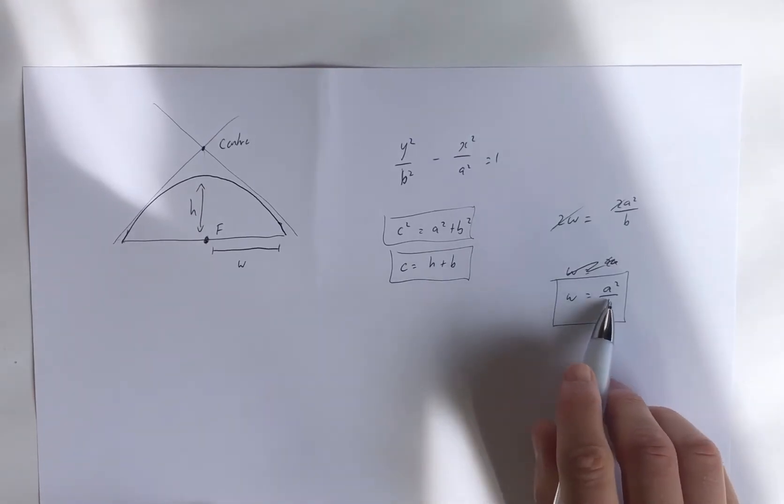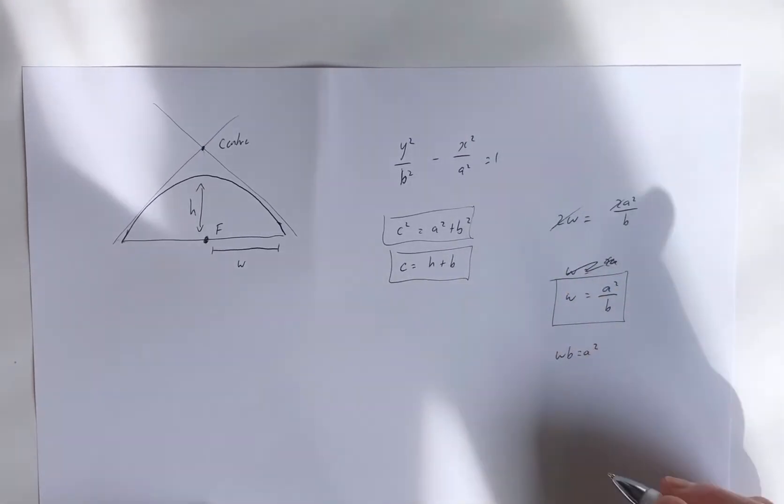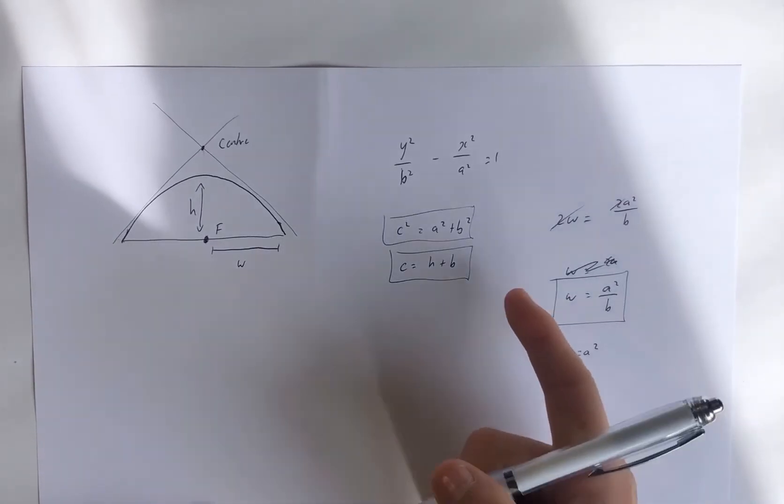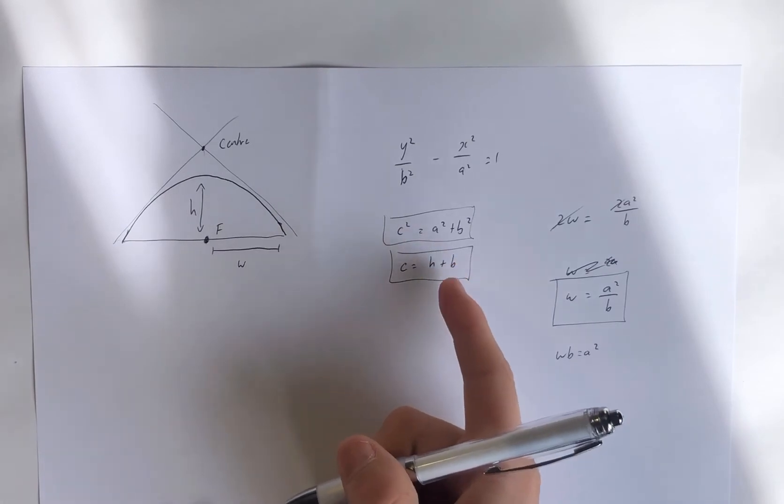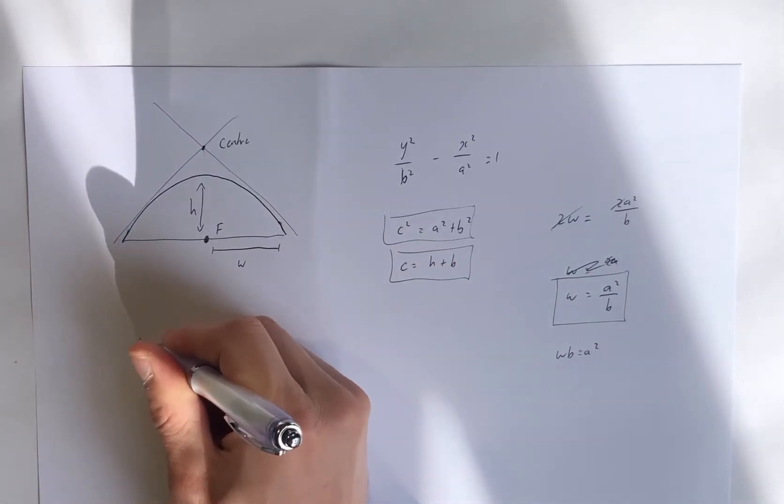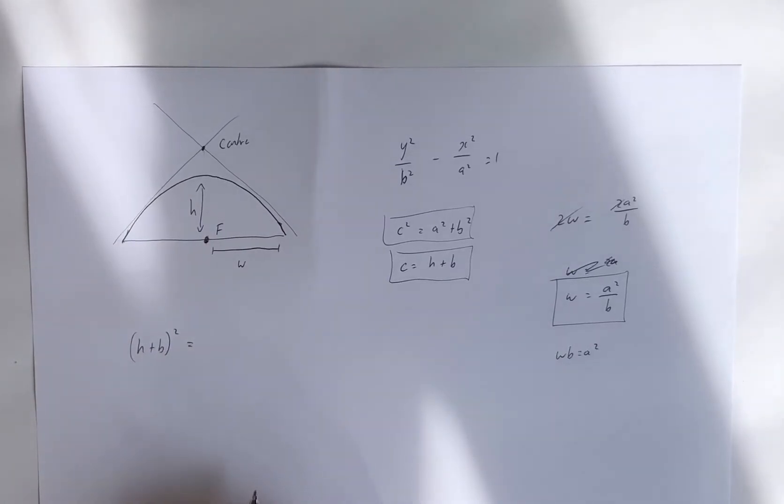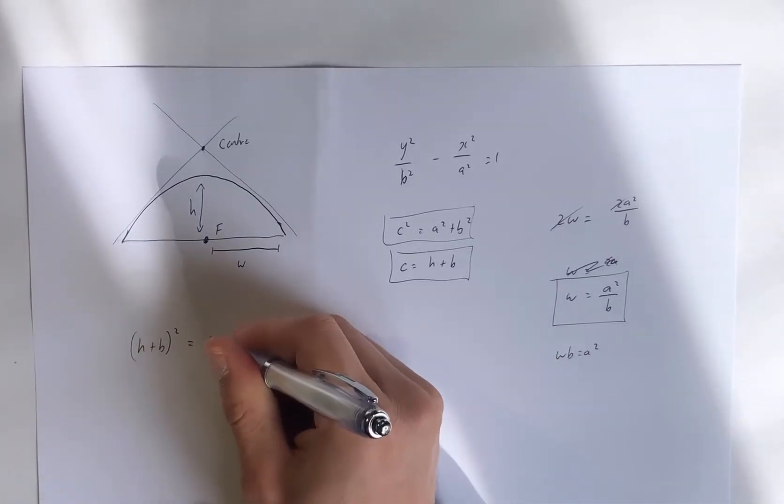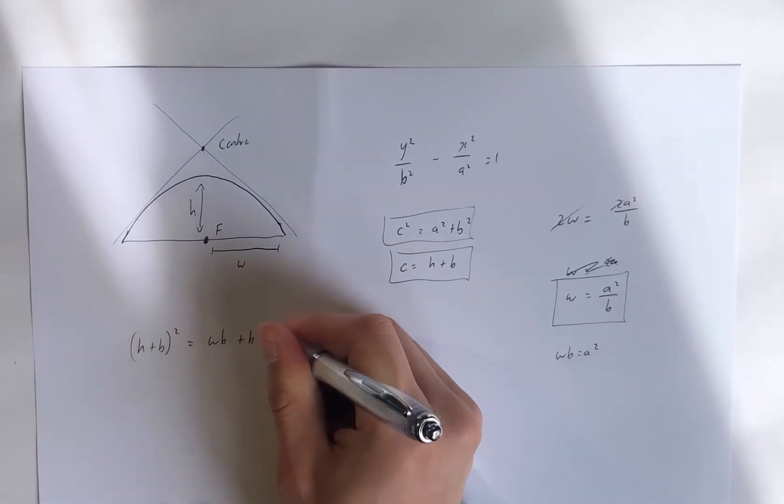If we were to, a squared we'd get as wb. So c squared is (h plus b) all squared, is equal to wb, because that's a squared, plus b squared.